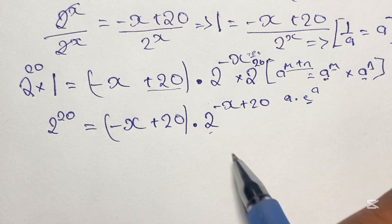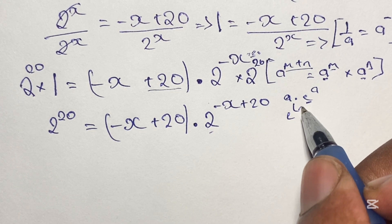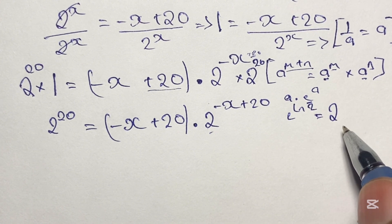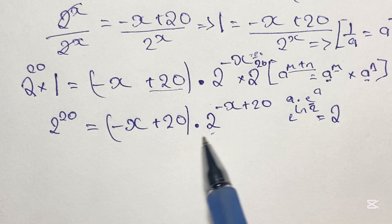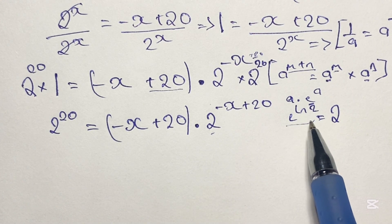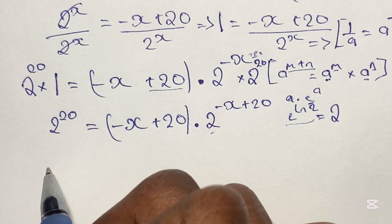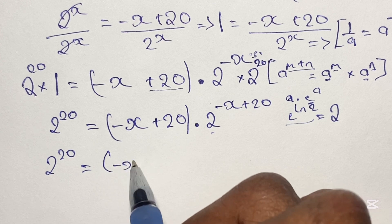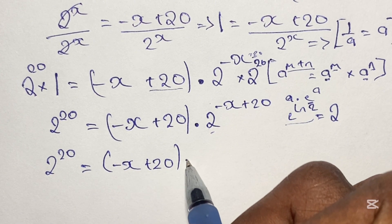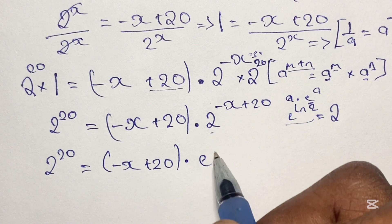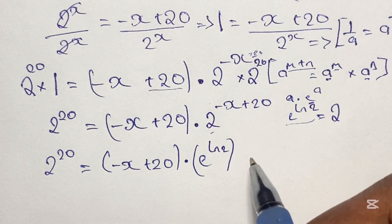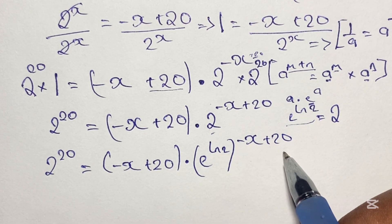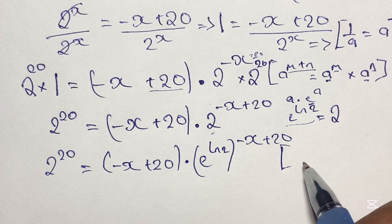But we need e in our equation. We can take 2 and write it in terms of e, and this is done by having e to the power of ln 2, since e to the power of ln 2 actually equals 2. So with this understanding we can interchange our 2 in the equation with e to the power of ln 2. So then from here we'd have 2 to the power of 20 is equal to negative x plus 20 in brackets times e to the power of ln 2, with that quantity raised to the power of negative x plus 20.